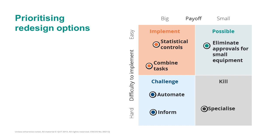Finally, two automation options were considered. One was to provide a self-service portal so site engineers could consult the supplier's equipment catalogue. The second was to automate the process end to end. As both require deployment of technology, they will be relatively difficult to implement. However, they can have a large payoff in terms of reducing defects, providing higher visibility to stakeholders, and by the same token reducing cycle times.